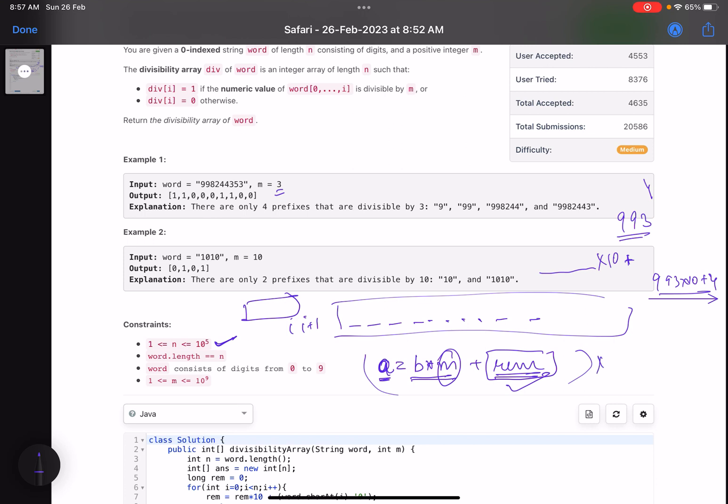For the ith position I've calculated, now I will calculate for i plus 1th position. If you do this, a on LHS and RHS, it will become a into 10 plus current digit equals b into m into 10 plus remainder into 10 plus current digit. Just see the beauty: we want to calculate the remainder for this new number being formed. This guy, b into m into 10, is divisible by m, so this is gone, remainder is 0.